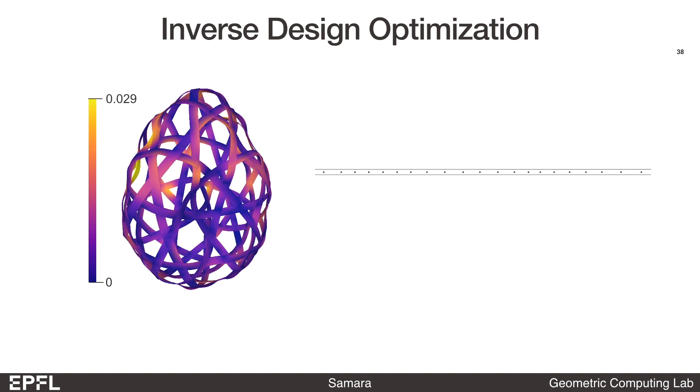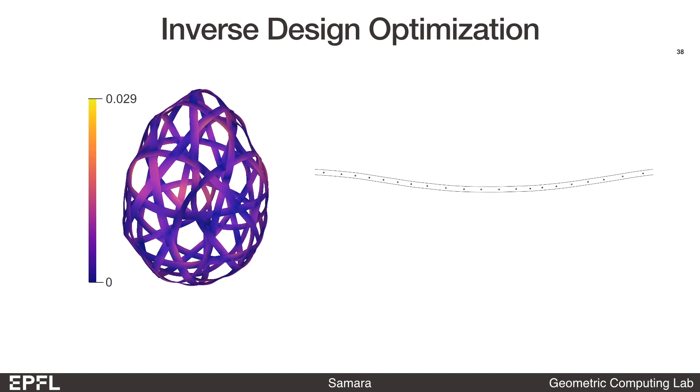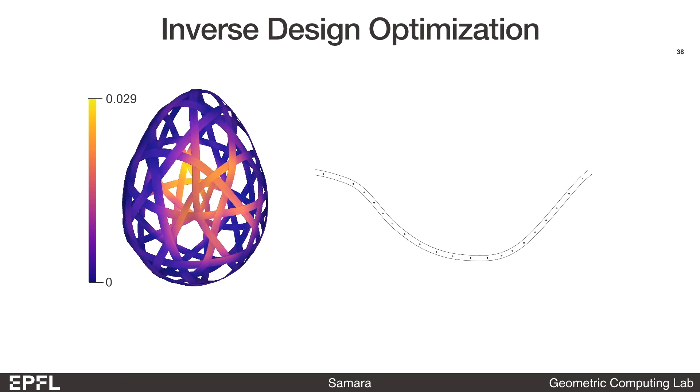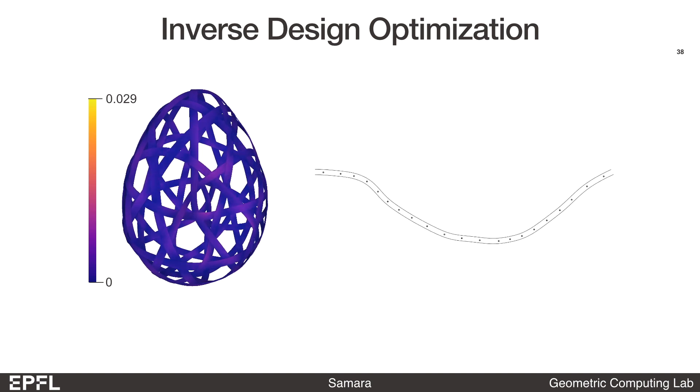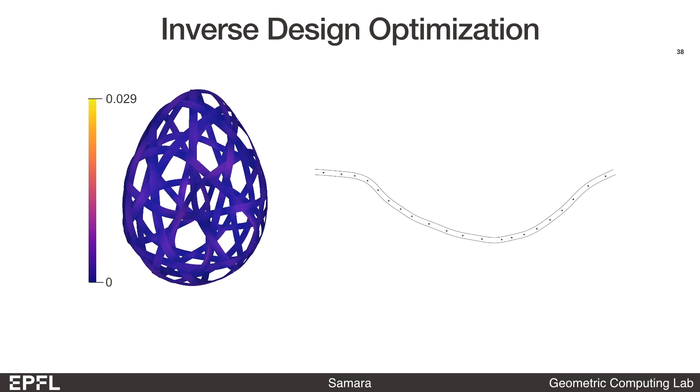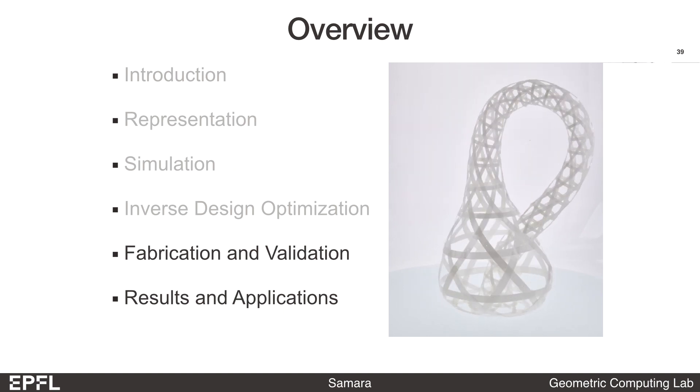Here is a recording of the optimization process. Again, the colors encode the distance from the woven structure to the target surface. You can see that this value is decreasing while the ribbon is going from straight to curved. That concludes the summary of our design framework.